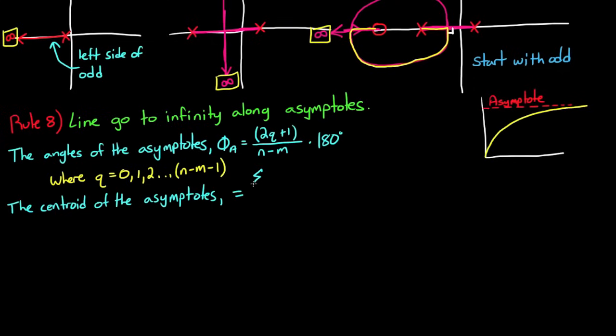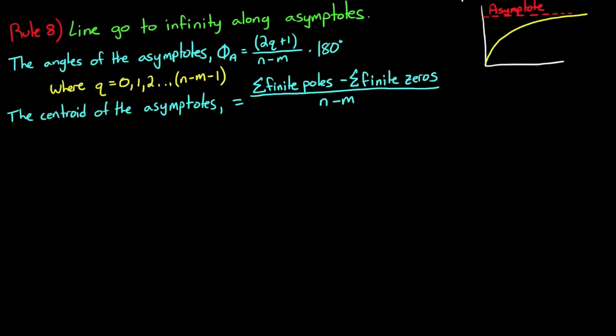The other part of this rule states that the centroid of the asymptotes all come together to a single point on the real axis. And they do this as what's called the center of gravity of the poles, which is the sum of all of the finite poles minus the sum of the finite zeros divided by the number of unmatched pairs. Remember that n minus m is the number of poles minus the number of zeros, which is just the number of lines that go to infinity.